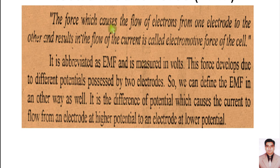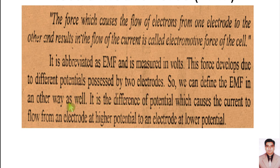Now the question is how this electromotive force is developed in a cell. The answer is that EMF or electromotive force is developed due to different potentials possessed by two electrodes. So if you want to define electromotive force, it is the difference of potential which causes the current to flow from an electrode at higher potential to an electrode at lower potential. When electrons flow from an electrode at higher potential to an electrode at lower potential, the difference of potential causes the electrons to flow, and as a result a force is developed — this force is called electromotive force.